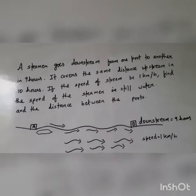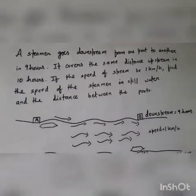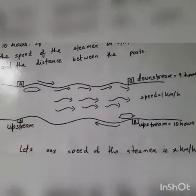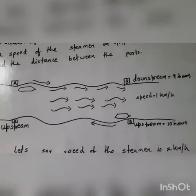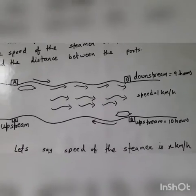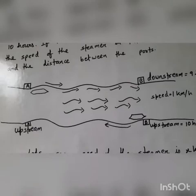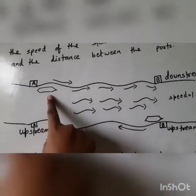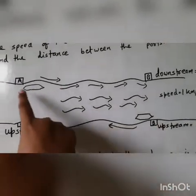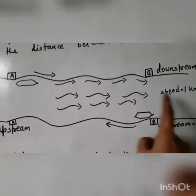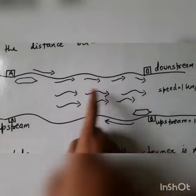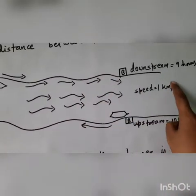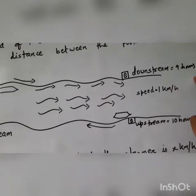If you understand the solution, then this is actually pretty easy. So you see what do you understand with the words downstream and upstream. So downstream what happens when the ship, like I have drawn it - A, this is the steamer and this is the stream. The stream is going from point A to point B in this direction. If steamer is also going in the same direction, this is called downstream which is taking 9 hours for the steamer.